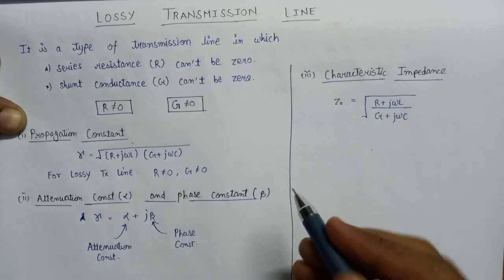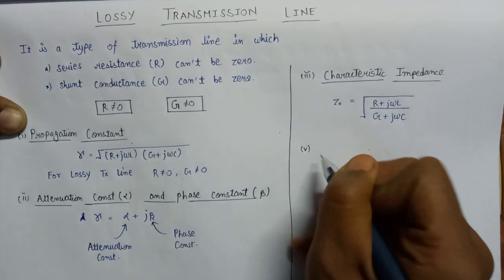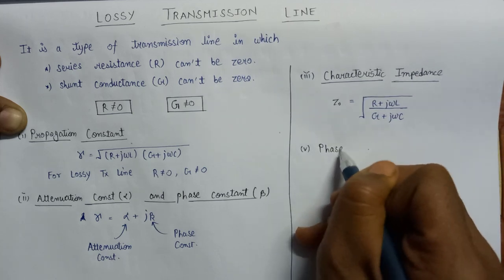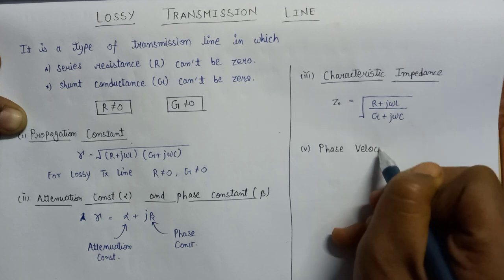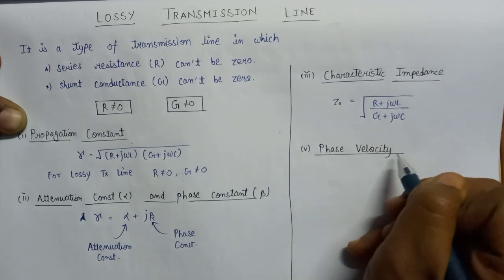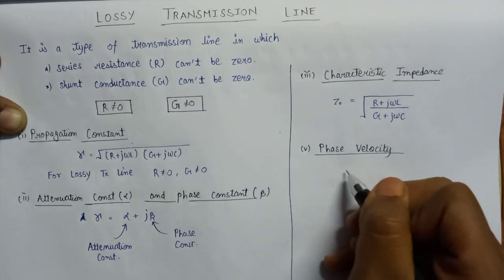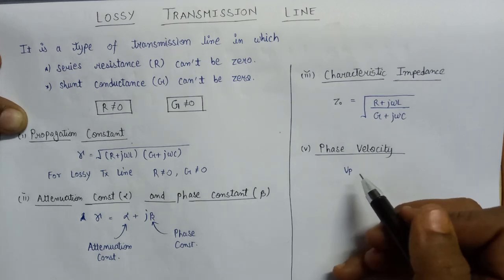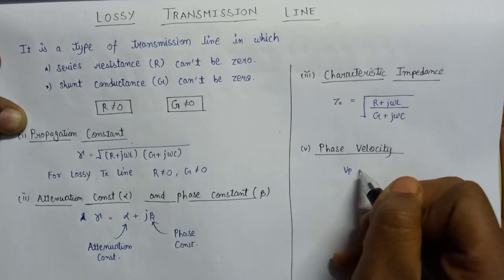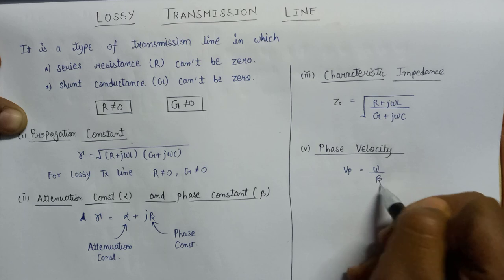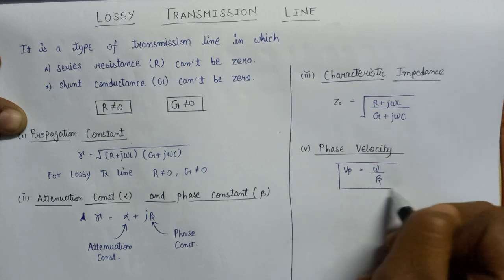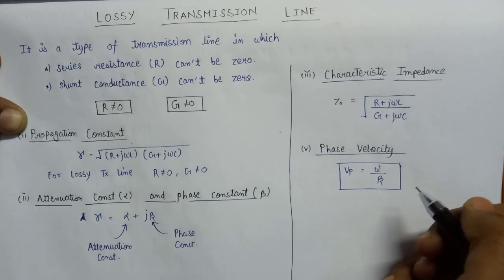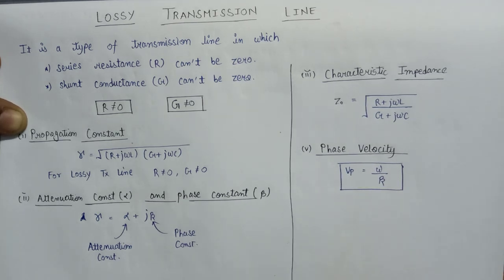Now let us discuss about the last parameter, which is phase velocity, denoted by the symbol Vp. For lossy transmission line, the expression for phase velocity is equal to omega over beta. This is the formula for the evaluation of phase velocity, and this is all about lossy transmission line. If you like my videos, please subscribe to my channel and press the like button. Thank you.